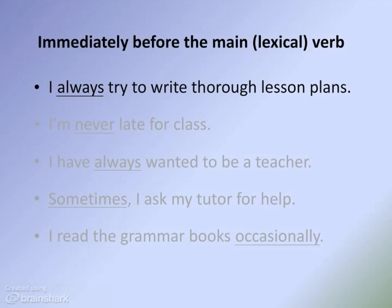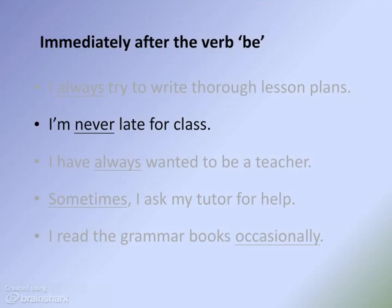Adverbs of frequency go immediately before the main lexical verb. So in 'I always try to write,' the main lexical verb is 'try' — 'to write' is an infinitive, so it's different — and the adverb comes immediately before 'try.' The exception to this is if the main verb in the sentence is 'be.' So 'I am,' 'he is,' 'she is' — these are all 'be.' In that case, the adverb comes after: 'I'm never late for class.' So it comes before the main lexical verb, but if it's the verb 'be,' it comes immediately afterwards.